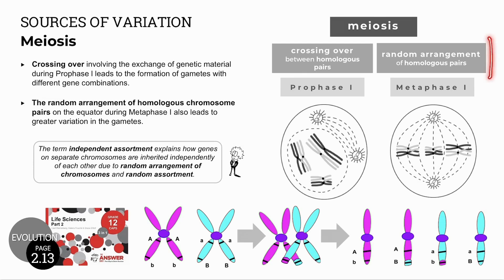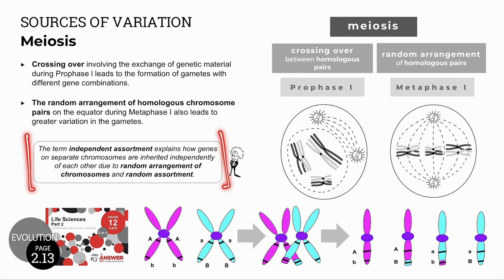Random arrangement of homologous chromosome pairs in metaphase 1 refers to the random positioning of the maternal and paternal chromosomes on the equator, or the middle of the cell. A paternal chromosome, for example this one here, may be positioned above or below the equator — it's random, and it leads to greater variation in the gametes. Don't confuse independent assortment and random assortment with this source of variation. You can look back at the chapter on meiosis to revise these related concepts.